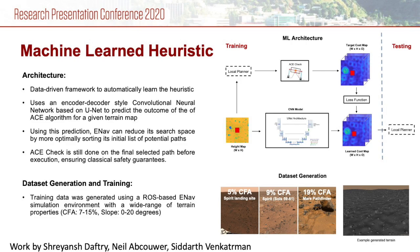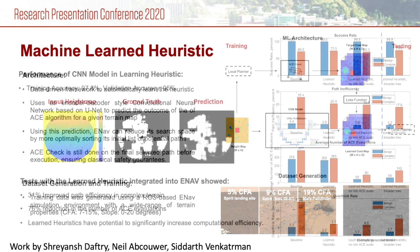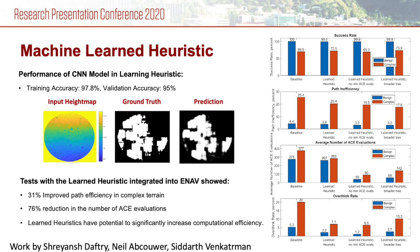We also developed a machine learned heuristic. In contrast to the gradient convolution heuristic, which is hand designed by domain experts, we used a data driven framework to automatically encode the learned heuristic. More specifically, we developed a machine learning model based on an existing convolutional neural network model called UNET to predict the outcome of the ACE algorithm for a given terrain height map. Using this prediction, ENAV can more optimally sort its initial list of potential paths and hence reduce the average number of ACE evaluations required to find a safe path. Importantly, the same safety guarantees of the original ACE algorithm persist as any selected path is still evaluated by the true ACE algorithm.